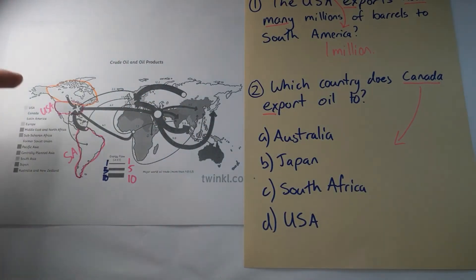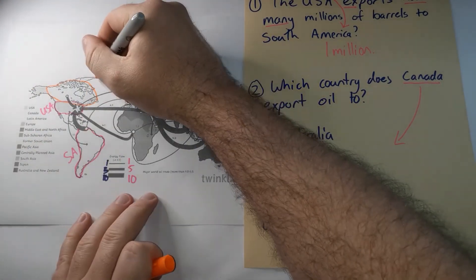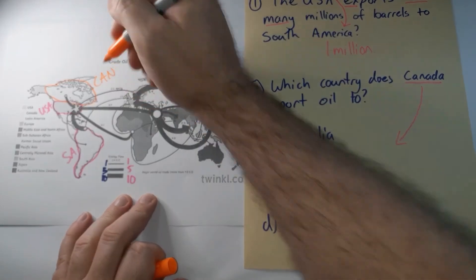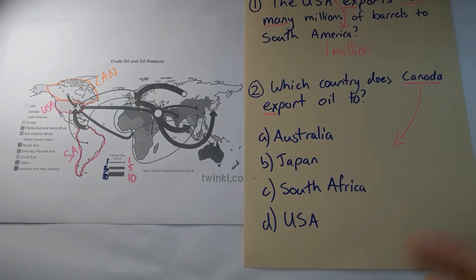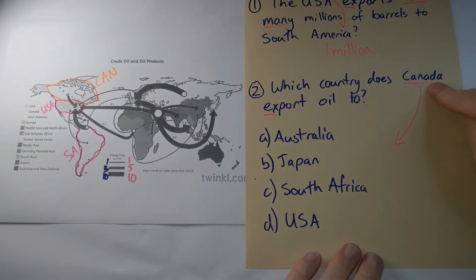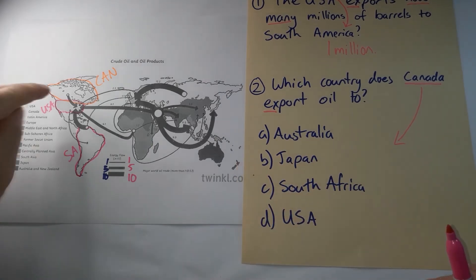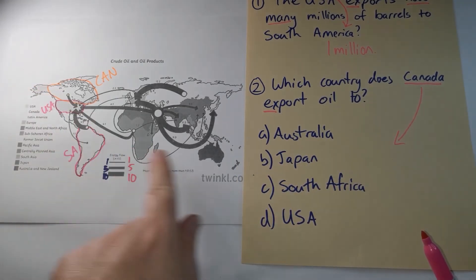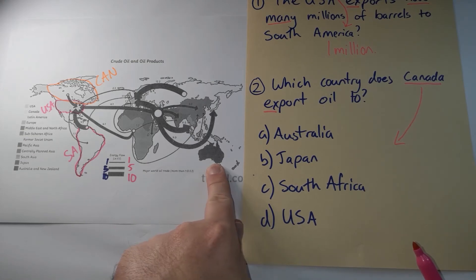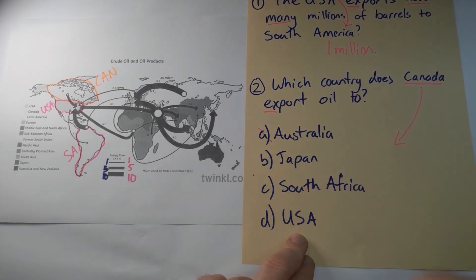Canada, I've just outlined up here in orange and I'll put 'Can' next to it. We need to find out if there is a flow line from Canada to which one of these four countries. So let's cross them off. Australia. Is there an arrow leaving Canada going all the way over here to Australia? I can't see one so I'm going to cross Australia off the list.